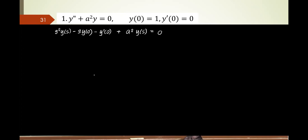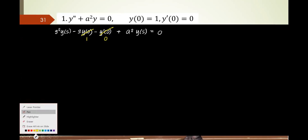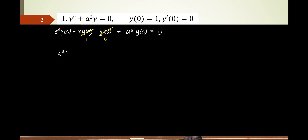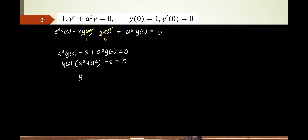Looking at the initial conditions: y(0) is equal to 1, so that term is simply 1. y prime of 0 is equal to 0, so that is 0. What we have is s squared y(s) minus s plus a squared y(s) equals 0. Factoring out y(s): y(s) times (s squared plus a squared) minus s equals 0. Therefore y(s) equals s over (s squared plus a squared). The inverse Laplace of this is cosine of at. That's how it was derived.